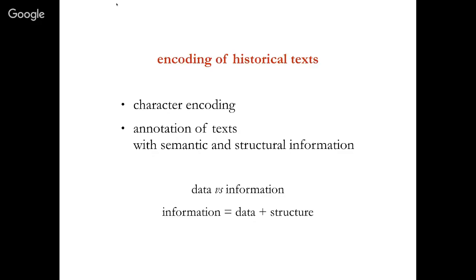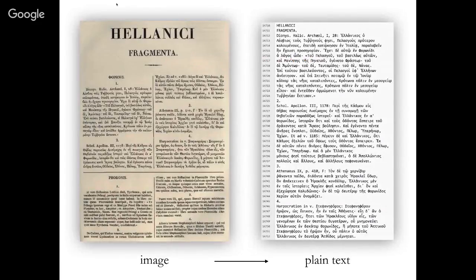There are many different possibilities for structuring our data, but today we are going to focus on markup languages. Here I have an example of an OCR output. On the left you can see an image of a page of a printed book, and on the right you have the OCR output — a plain text. This output apparently keeps the layout of the printed page, but for the machine it is just a sequence of characters.